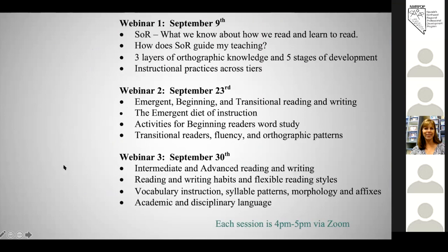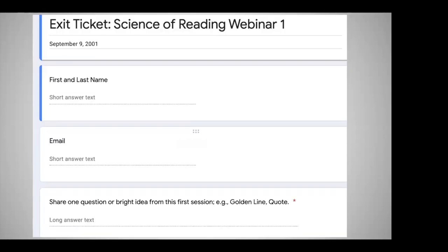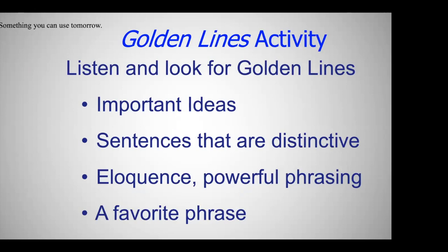These are the three seminars we're doing. The first one is an overview — I'm going to do Science of Reading. The next one I'm looking at emergent, beginning, and transitional literacy. The third one covers intermediate and advanced. I'll take your questions at the end and answer them directly or by way of my handout presentation next time. At the end, I'd like you to share one question or bright idea from today's first session — a golden line.